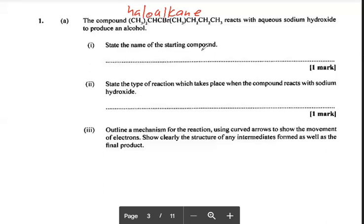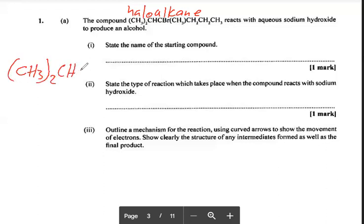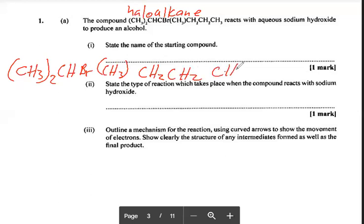It says state the name of the starting compound. What you should do is convert this to the structural formula or the displayed formula. The condensed formula is: (CH3)2CHBrCH(CH2CH2CH3). So we have two methyl groups, a carbon with a hydrogen, then a carbon with bromine attached, and a propyl chain.